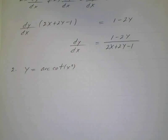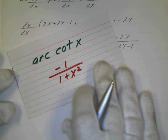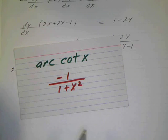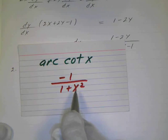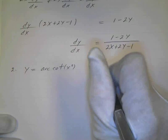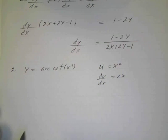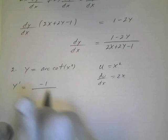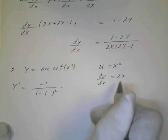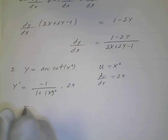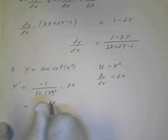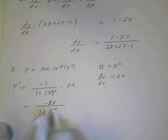The derivative of arc cotangent is negative 1 over 1 plus x squared — just like arc tangent but negative. So arc cotangent gives negative 1 over 1 plus u squared, times du/dx. In this case u is x squared, so du/dx is 2x. Therefore y prime equals negative 1 over 1 plus x-squared-squared, times 2x. x squared squared is x to the fourth.